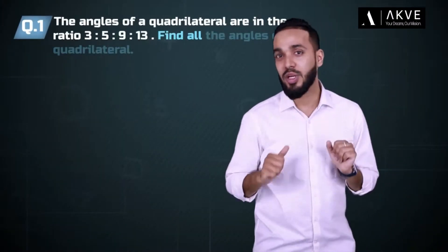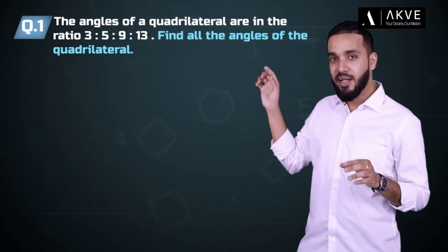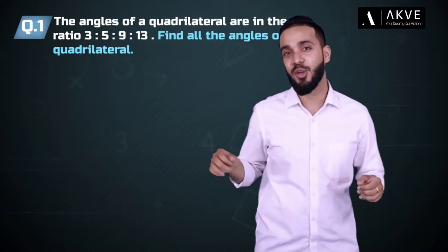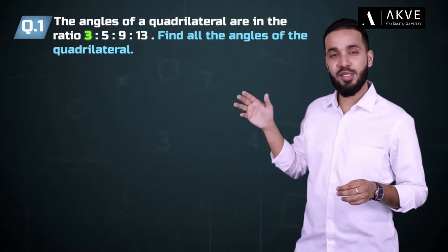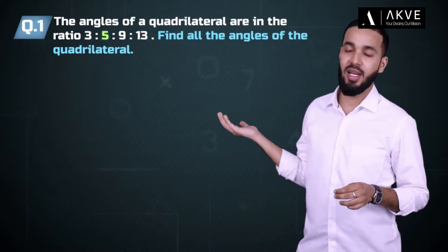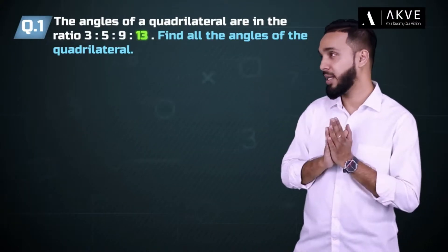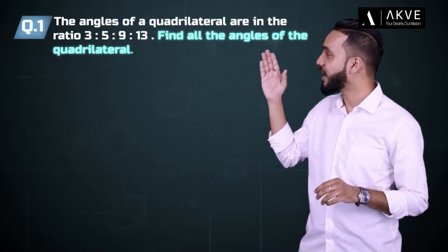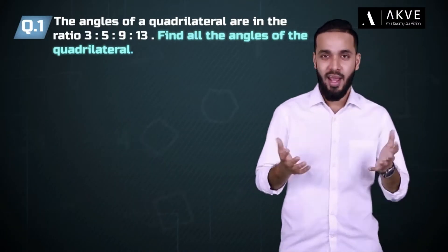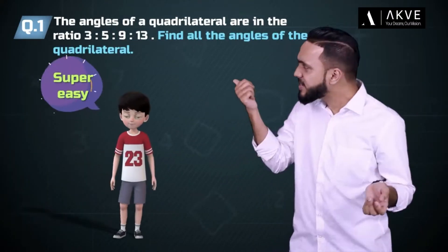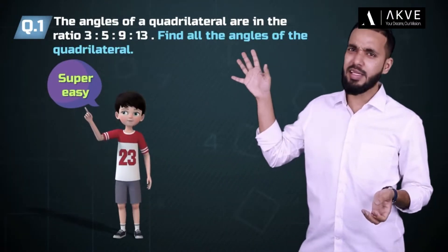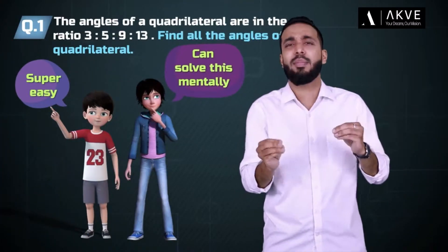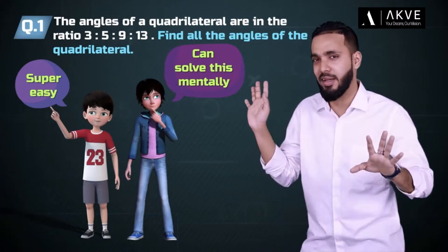This one states that the angles of a quadrilateral are in the ratio 3:5:9:13. We have to find all the angles of the quadrilateral. This one's super easy — we don't even need a diagram for this one. You can probably solve it mentally.